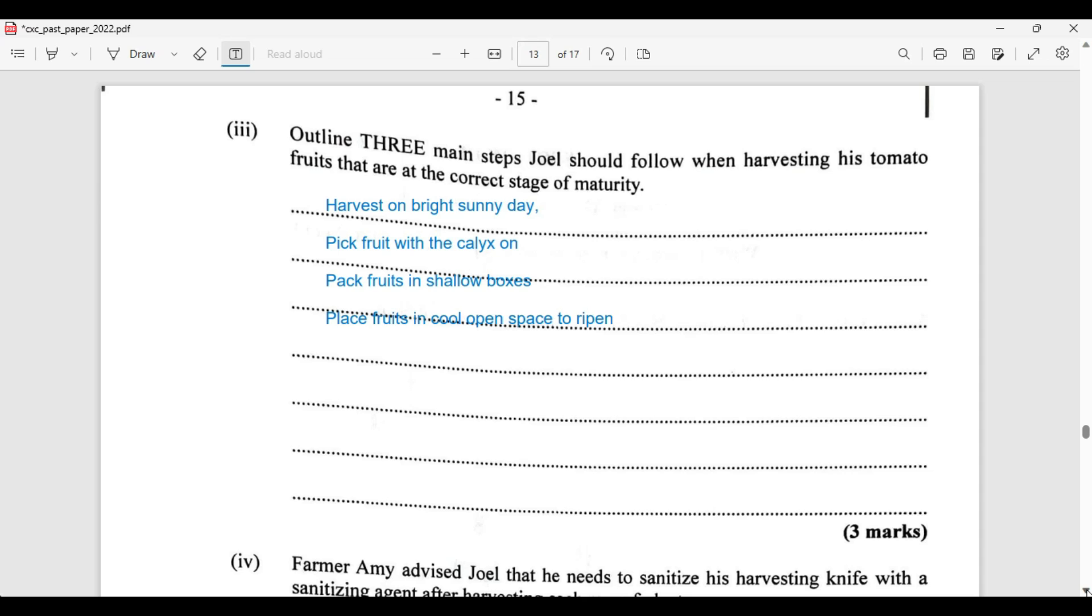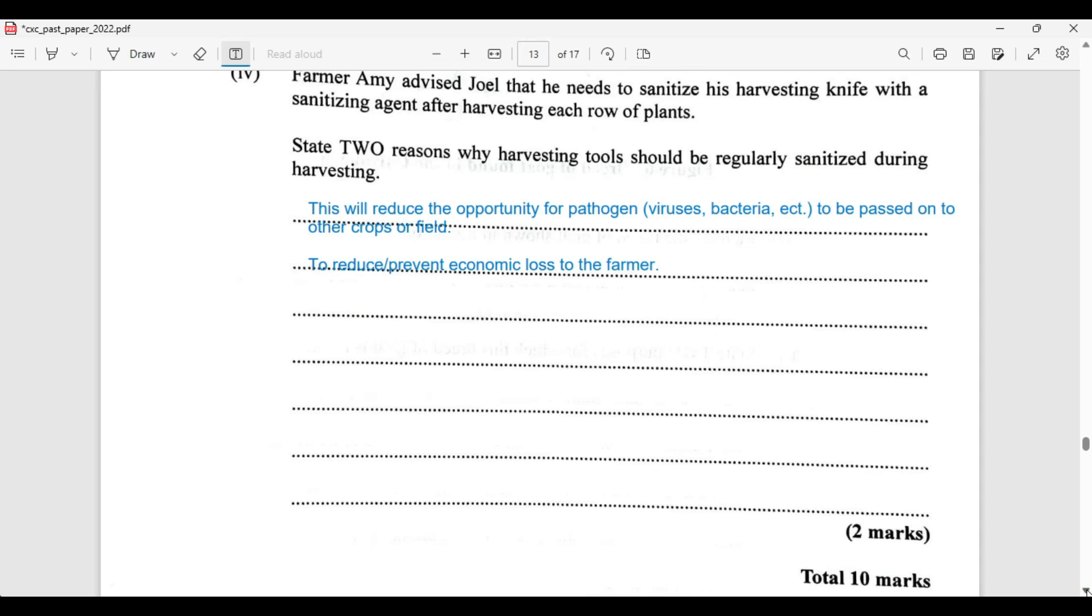Farmer Amy advised Joel that he needs to sanitize his harvesting knife with a sanitizer after harvesting each row of plants. State two reasons why harvesting tools should be regularly sanitized during harvest. Well, the first of these is to prevent the spread of bacteria, viruses, etc. You don't want it to be spread from one plant to another.